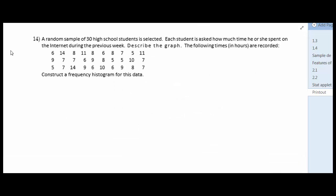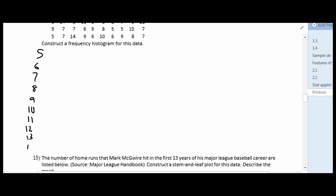Number 14, a random sample of 30 high school students is selected. Each student is asked how much time he or she spent on the internet during the previous week. Describe the graph. The following times are recorded and then construct a frequency histogram for this data. So the first thing I want to do is I just want to organize this. I could just type this in my calculator or I could just type it in Excel. It's actually small enough that I can just get away with organizing it. So I see that the smallest number I see is five. So I'm just going to do five, six, seven, eight, nine, 10, 11, 12, 13, and 14.